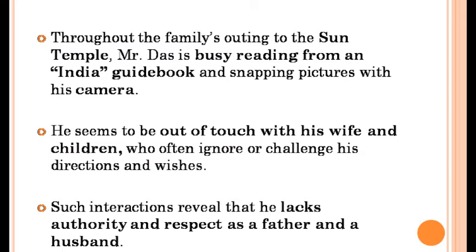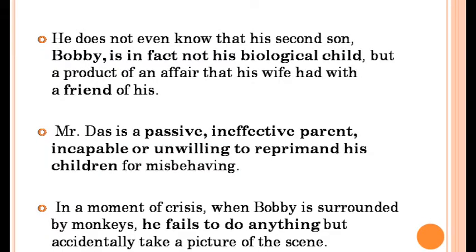Indeed, Mr. Das himself is unaware of how completely out of touch he is. He does not even know that his second son Bobby is in fact not his biological child but a product of an affair that his wife had with a friend of his. Mr. Das is a passive, ineffective parent, incapable or unwilling to reprimand his children for misbehaving. In a moment of crisis, when Bobby is surrounded by monkeys, he fails to do anything but accidentally take a picture of the scene.